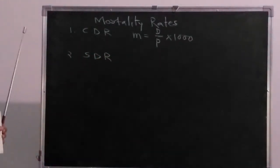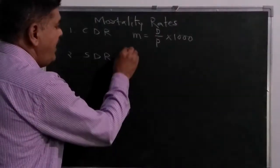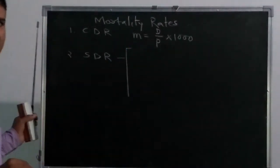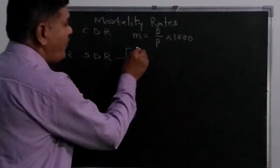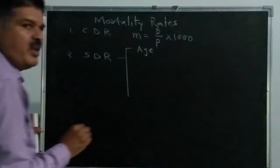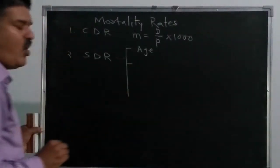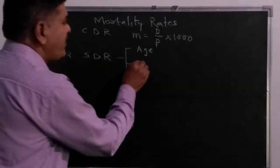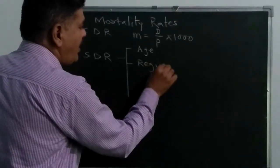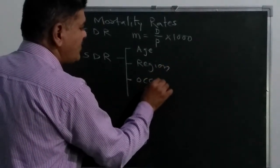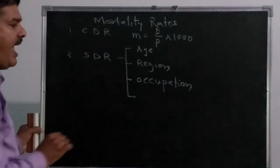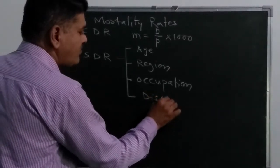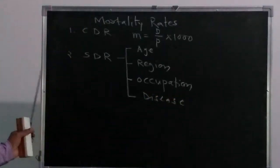We have seen specific death rate, and one such rate is according to age. Specific death rate means death rates according to a specific section of the population. One such section is age, another is region, the next is occupation, and we can also understand specific death rate as per disease.